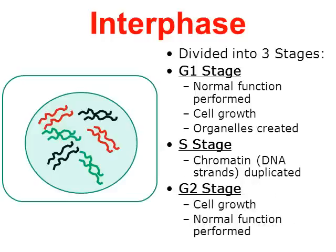Then we have the final stage of interphase called the G2 stage. Again, the G stands for growth or gap 2 — it's the second gap prior to mitosis. During the G2 stage, the cell will grow some more, and ultimately the cell is going to be performing its normal function. All of these events are getting the cell ready for mitosis. So interphase is not actually part of mitosis. Let's go into mitosis next.